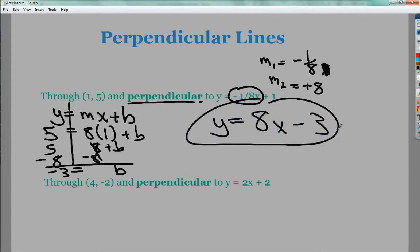That's a line that's perpendicular to it and goes through (1, 5). For the other one, a line that goes through (4, -2) and is perpendicular to y = 2x + 2. So my first slope, my original slope is 2. So I need to remember that means 2/1. So in order to get an answer, I need to flip it to 1/2, change it to negative. So I'm going to go into my equation for slope intercept.